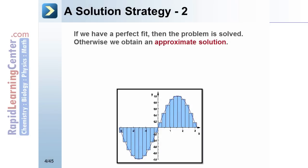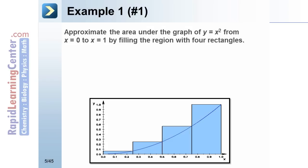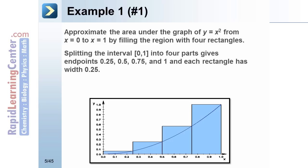Otherwise we obtain an approximate solution. The divide and conquer approach fails to provide an exact solution when the boundary of the region is curved. Example 1: approximate the area under the graph of y equals x squared from x equals 0 to x equals 1 by filling the region with four rectangles.